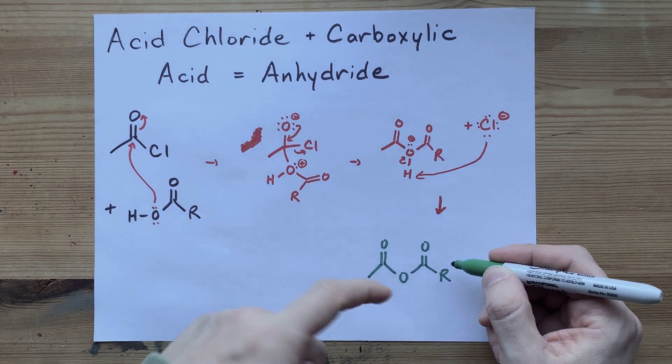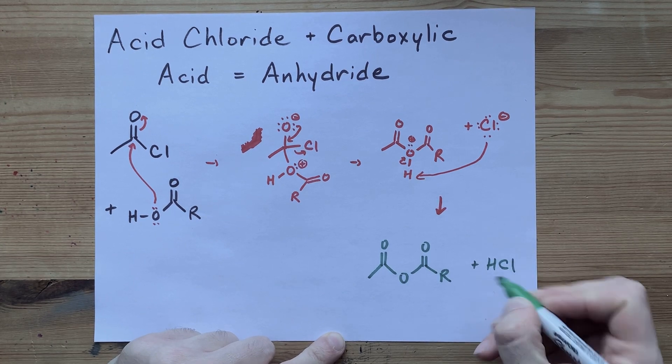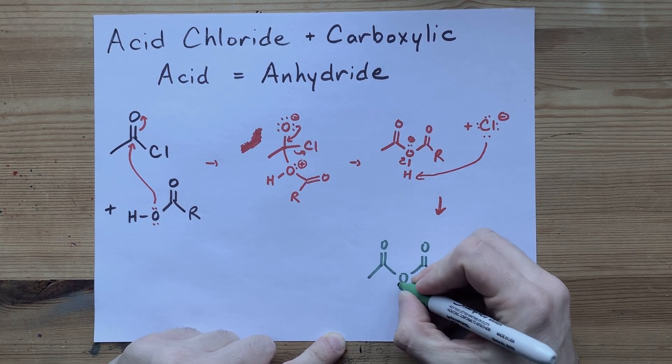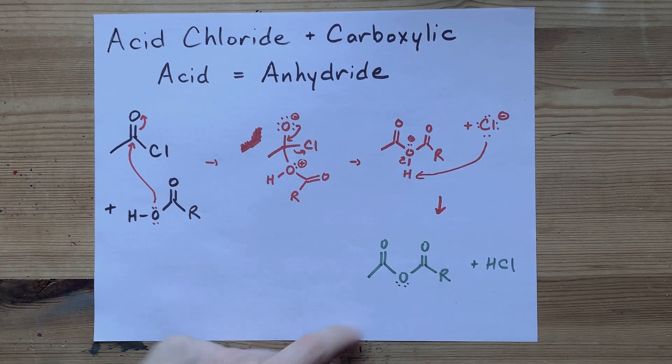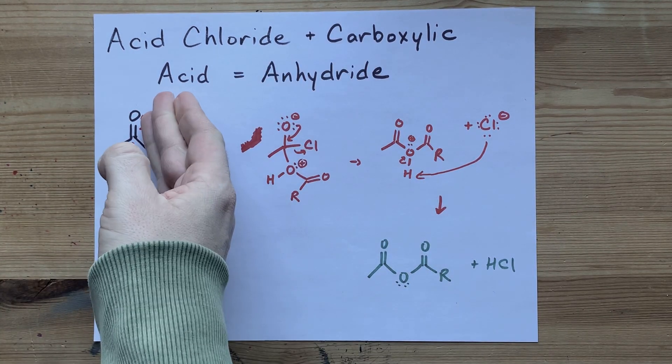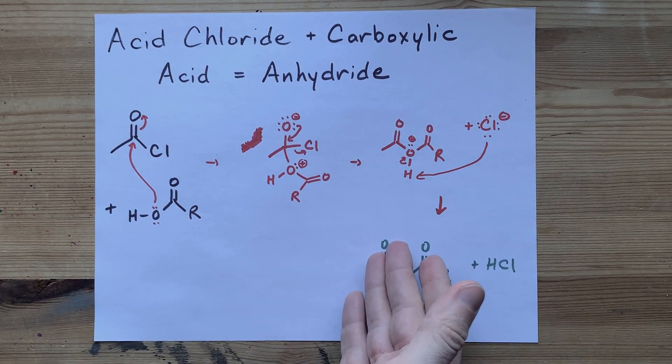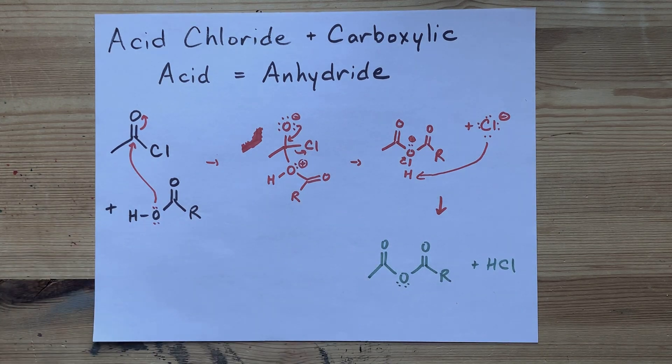That's an anhydride. In addition, you get HCl as a byproduct. But more importantly, you have this anhydride compound. Acid chlorides and carboxylic acids make an anhydride. Here's the mechanism. Hopefully you understood it. Best of luck.